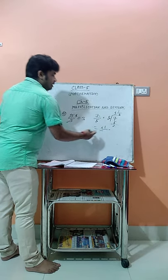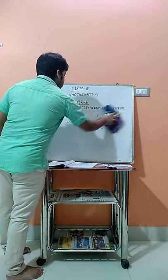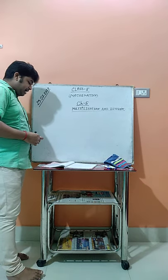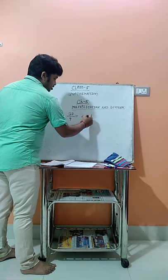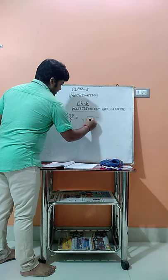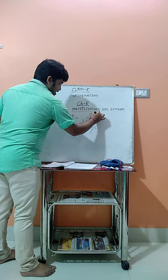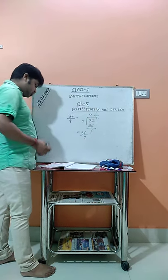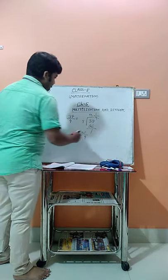Now the next one is 37/4. We divide 4 into 37: 4 times 9 is 36, with a remainder of 1. So the answer is 9 and 1/4. This is how you convert an improper fraction into a mixed fraction.